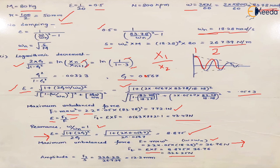The third part requires finding the amplitude of vibration at resonance. At resonance, the transmitted force acts through the spring, so the amplitude equals F upon S. S has already been calculated as 26,739 N/m and the transmitted force at resonance is 326 N. This gives us the amplitude of vibration at resonance.